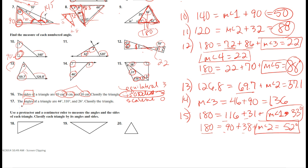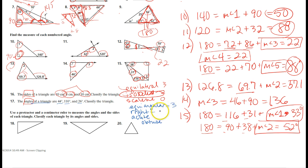Now let's classify by angles. With angles forty-four, one hundred and ten, and twenty-six, the options are equiangular, right, acute, and obtuse. Equiangular means three equal angles; right has a ninety-degree angle; acute has all angles less than ninety; obtuse has one angle greater than ninety. Since one hundred and ten is greater than ninety, this triangle is obtuse.